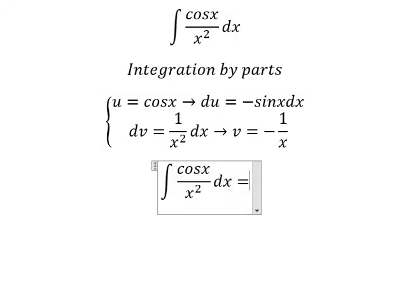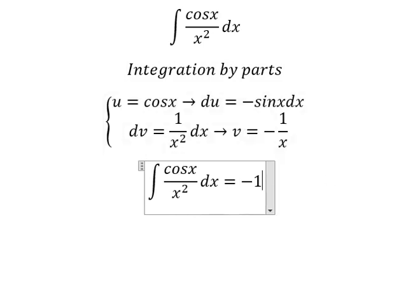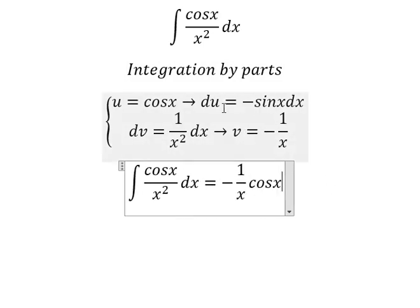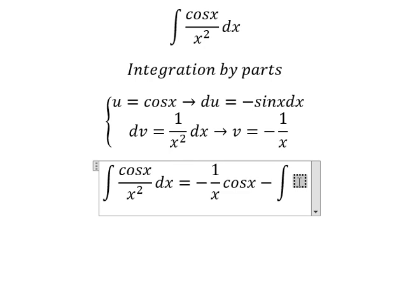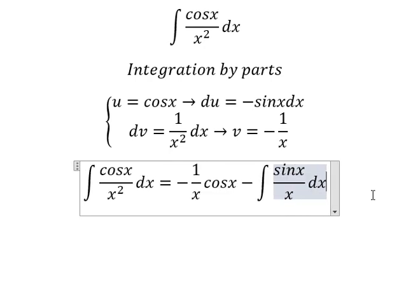So we have u multiplied by v. With u times v, negative with negative they will cancel, but we have another negative here. So we have negative, and we have the integral of sin x over x dx.